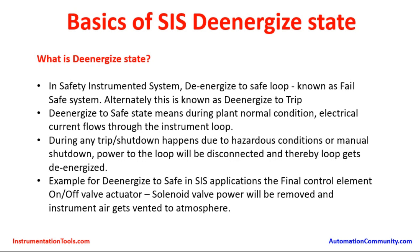De-energized to safe state means that during normal plant conditions, electrical current flows through the instrument loop. When plants are in normal operating conditions, valves in the safety instrumented system — specifically valves that are isolating a process, equipment, or a vessel — will be in the open position using the solenoid valve.